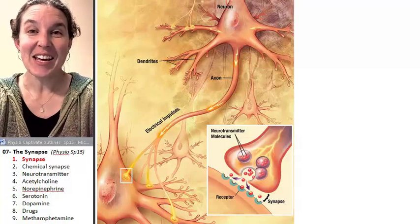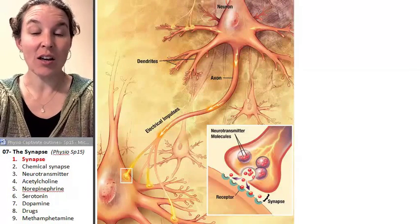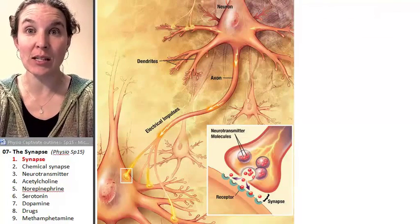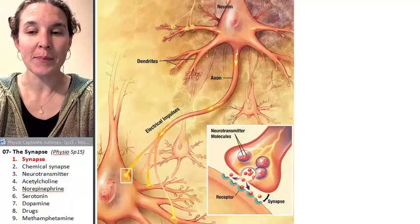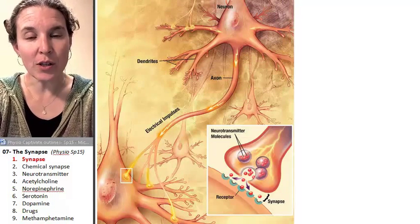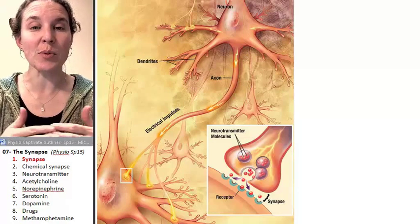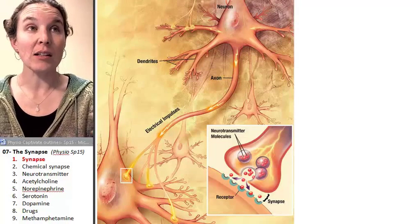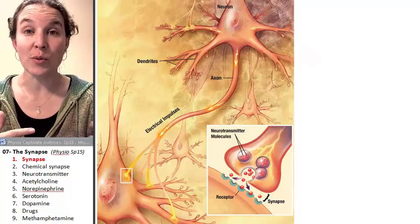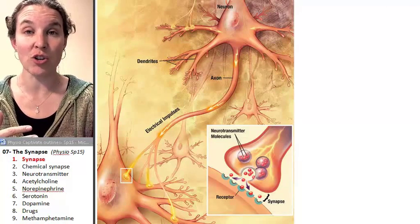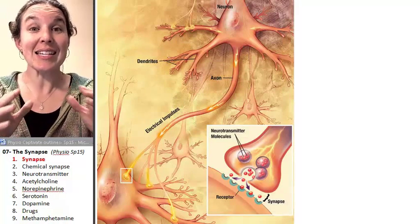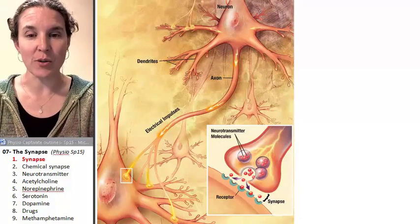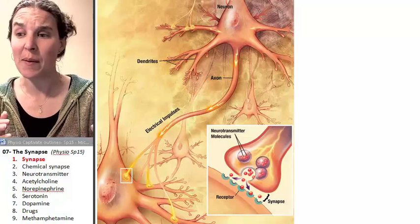Hello, everybody. Today we're going to finish our conversation about how the nervous system communicates information all around the body. In the last lecture, we learned about the action potential, and the action potential is essentially the tool, the strategy that allows for electrical communication down a neuron. And today's topic — we didn't go beyond the action potential in the previous lecture. So today we need to figure out what happens next.